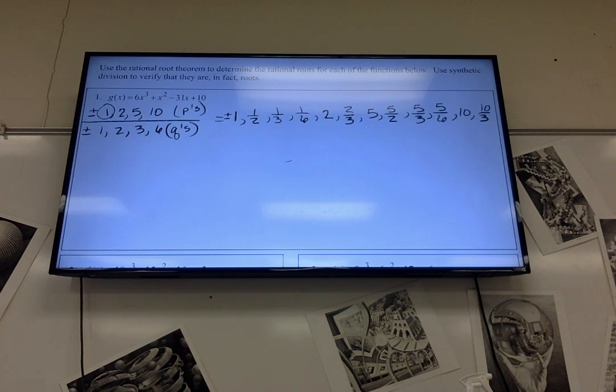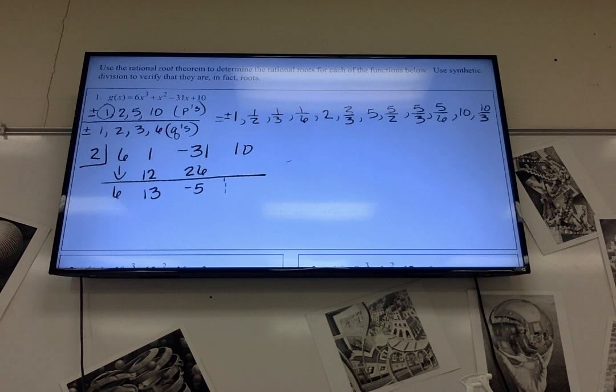And then I have six, one, negative 31, 10. Two times six is 12. Add those. Two times 13 is 26. Add those. Two times negative 5 is negative 10. Sure enough, it's working.